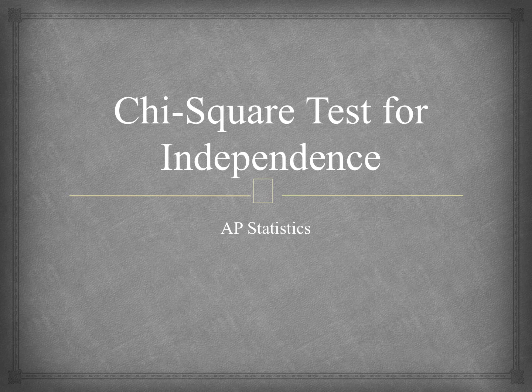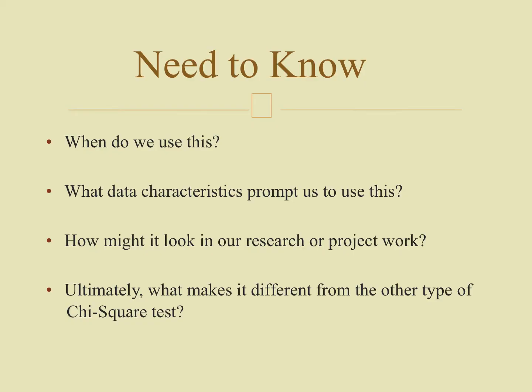Hello again, students. Back here with the second lesson of the Chi-Square unit. Chi-Square tests for independence — we'll also reference Chi-Square tests for homogeneity, which is very similar but slightly different in terms of where the data comes from. It's a design difference that we'll get into.